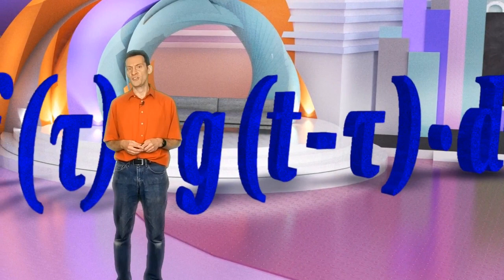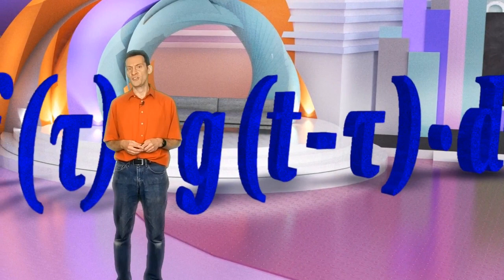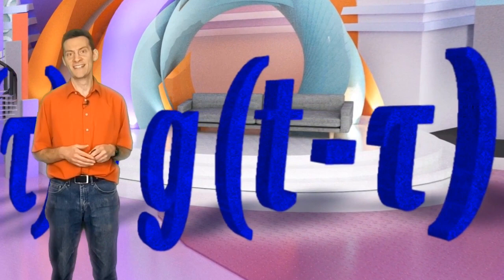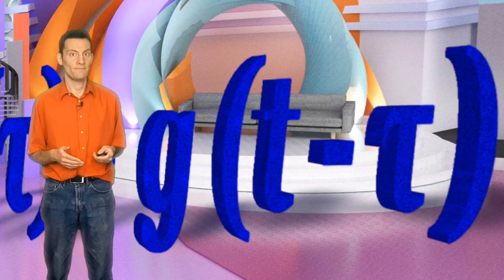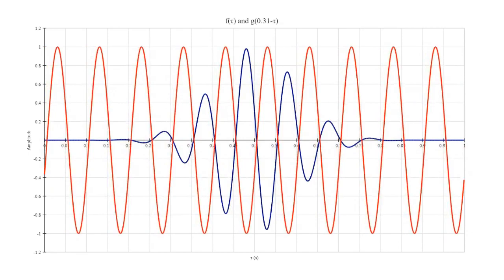But in the convolution equation, we don't have g of tau, we have g of t minus tau. As we said, the independent variable in this signal is time. This means that for this signal, t is some offset in time. As t changes, we are sliding the signal g of tau along the x-axis.